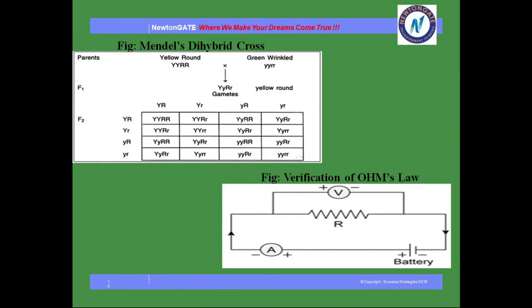Moving on to Mendel's dihybrid cross — this is not a proper exact diagram, but you have to practice this portion. You have to practice the crossing chart: F1, F2, and what are the gametes, genotypes, and phenotypes you get after the cross. Next comes Ohm's law, which is also very important — you have to practice this diagram as well.